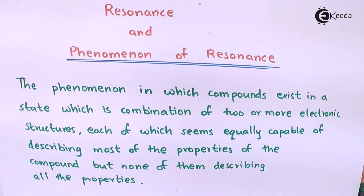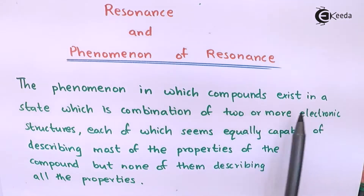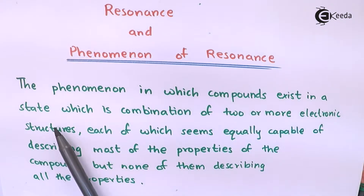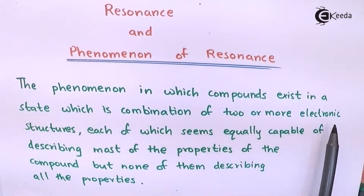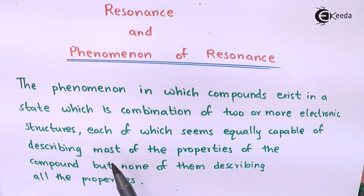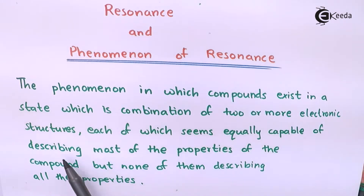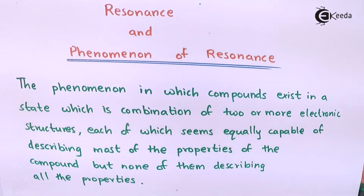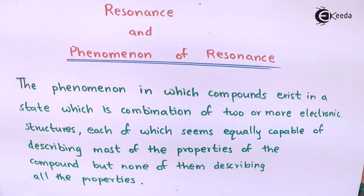Resonance is the phenomenon in which compounds exist in a state that is a combination of two or more electronic structures, each of which seems equally capable of describing most properties of the compound, but none of them describes all the properties. That kind of phenomenon showcased by a particular compound is known as resonance.